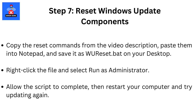Step 7: Reset Windows Update Components. Copy the reset commands from the video description, paste them into Notepad, and save it as WUReset.bat on your desktop. Right-click the file and select Run as Administrator. Allow the script to complete, then restart your computer and try updating again.